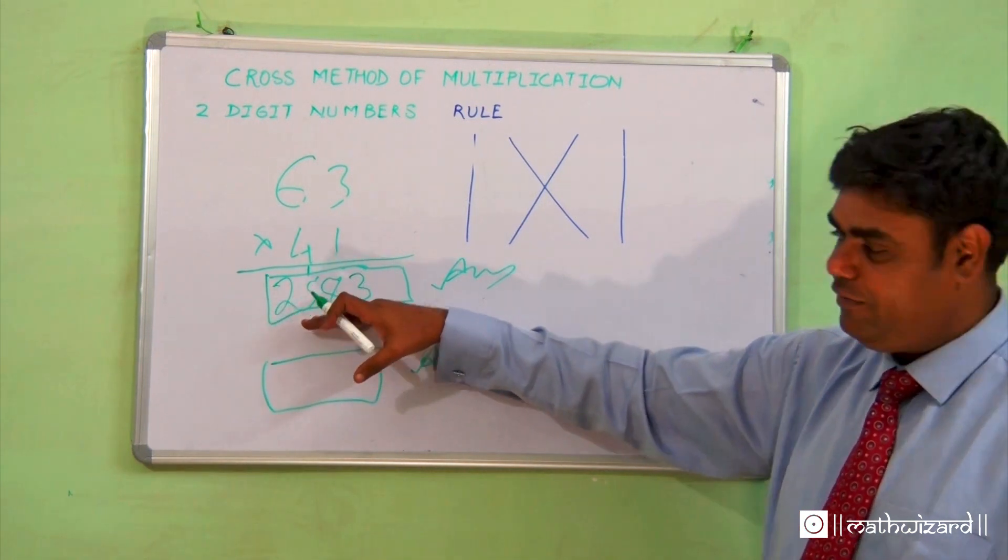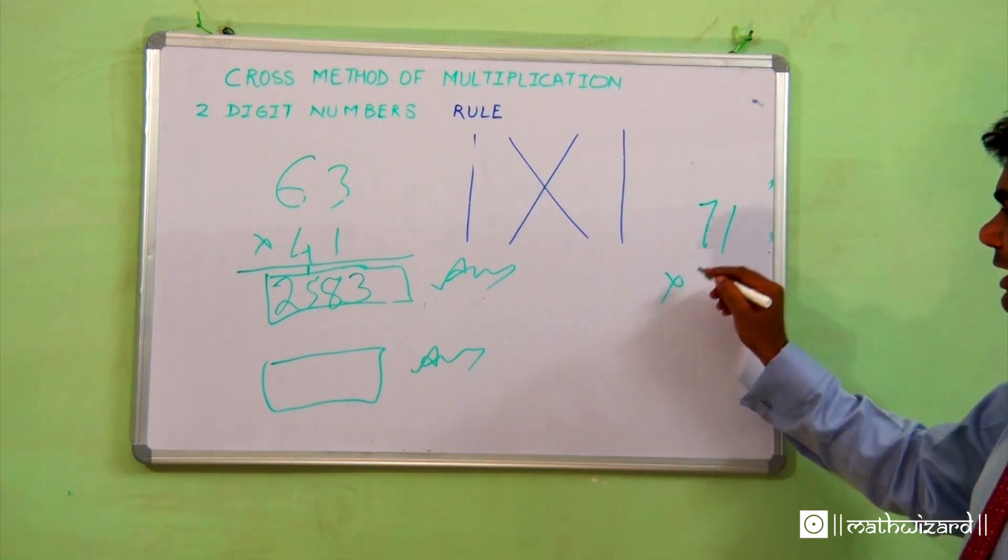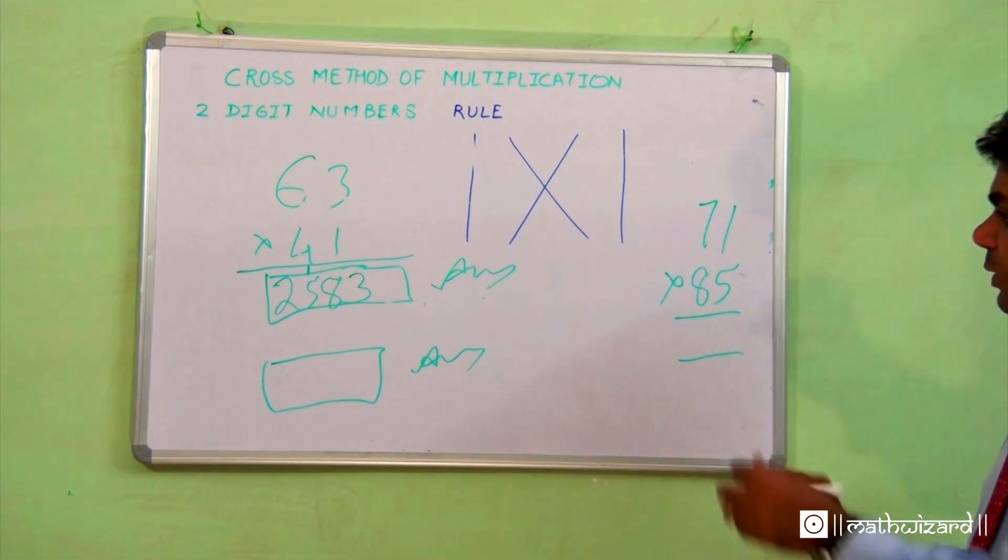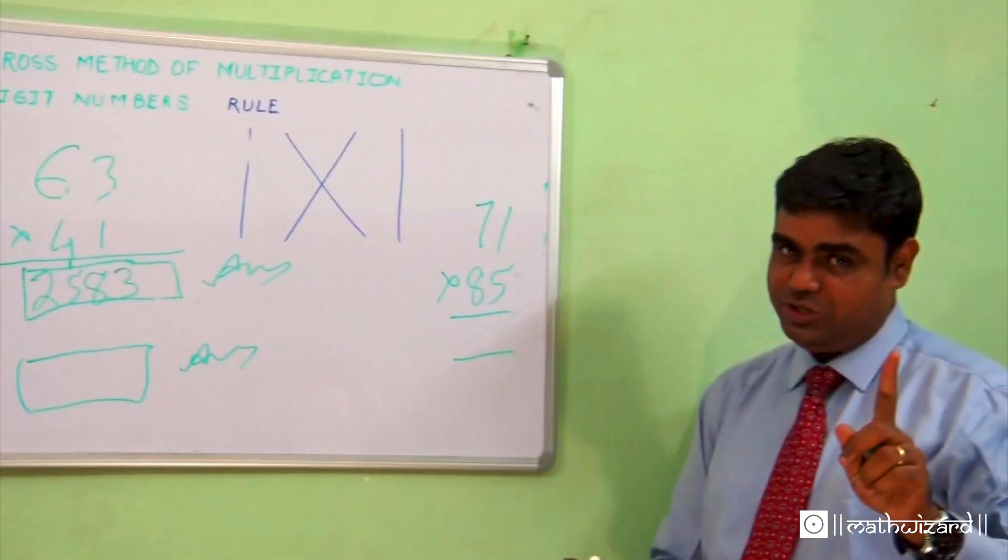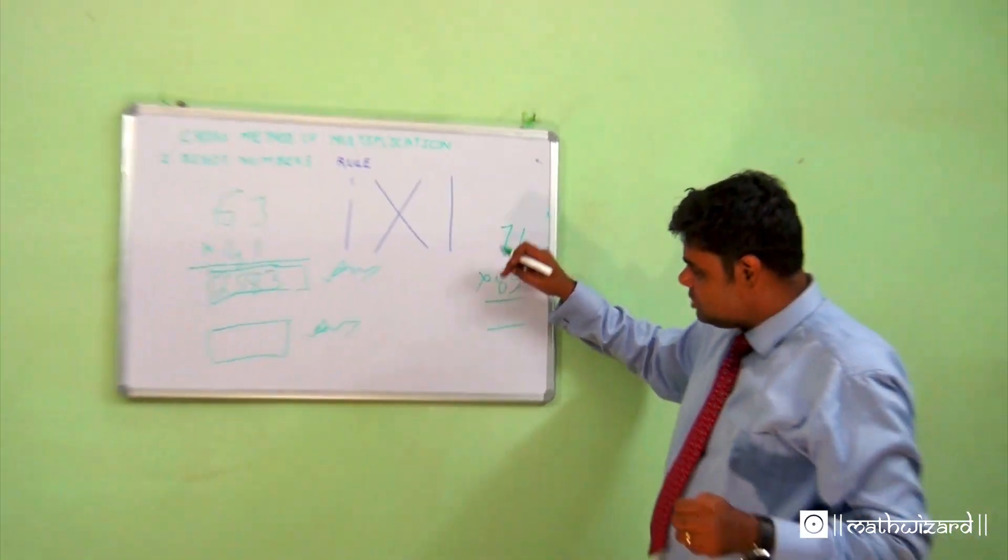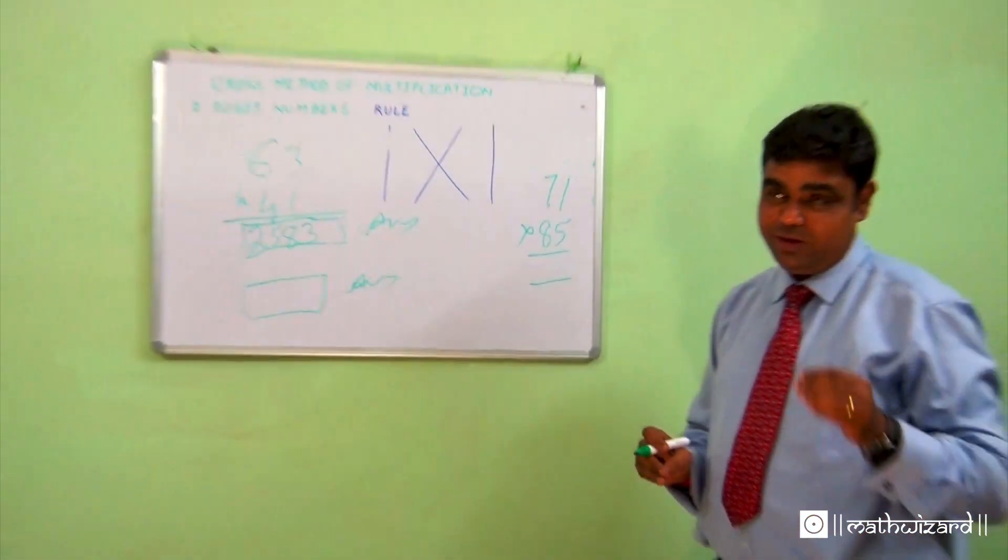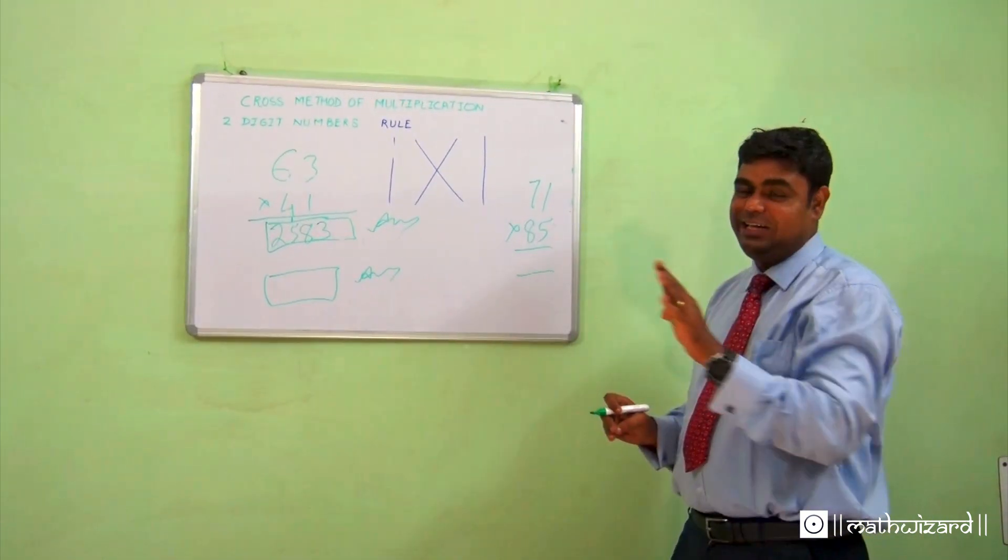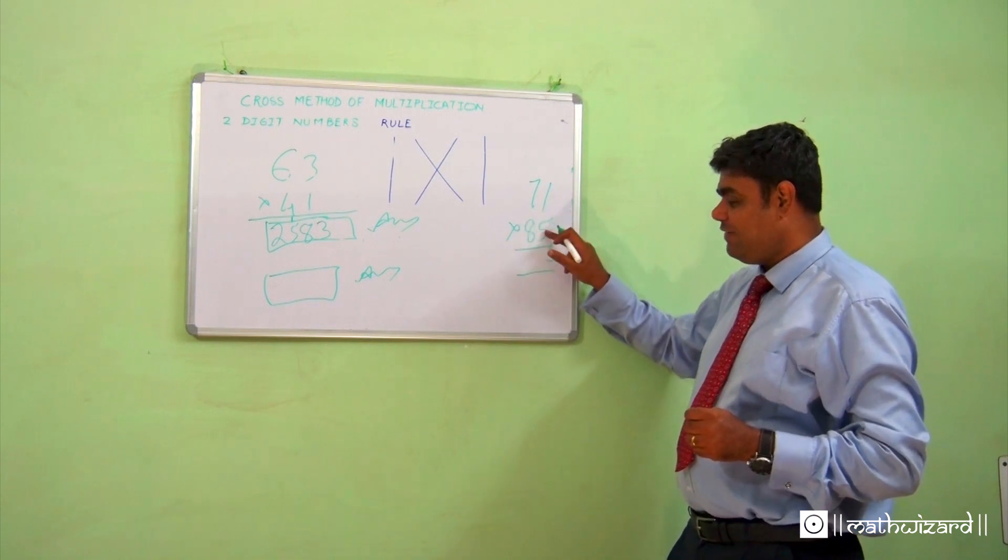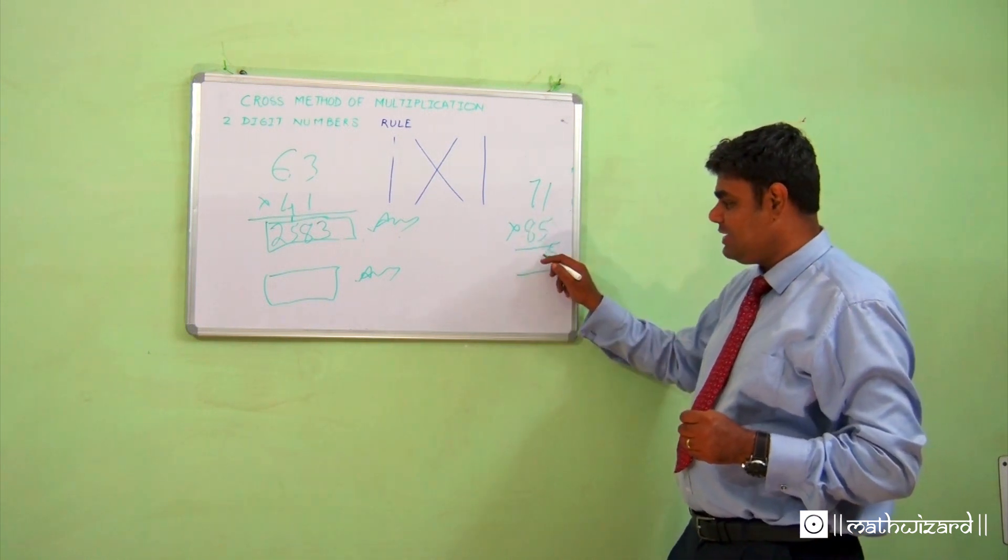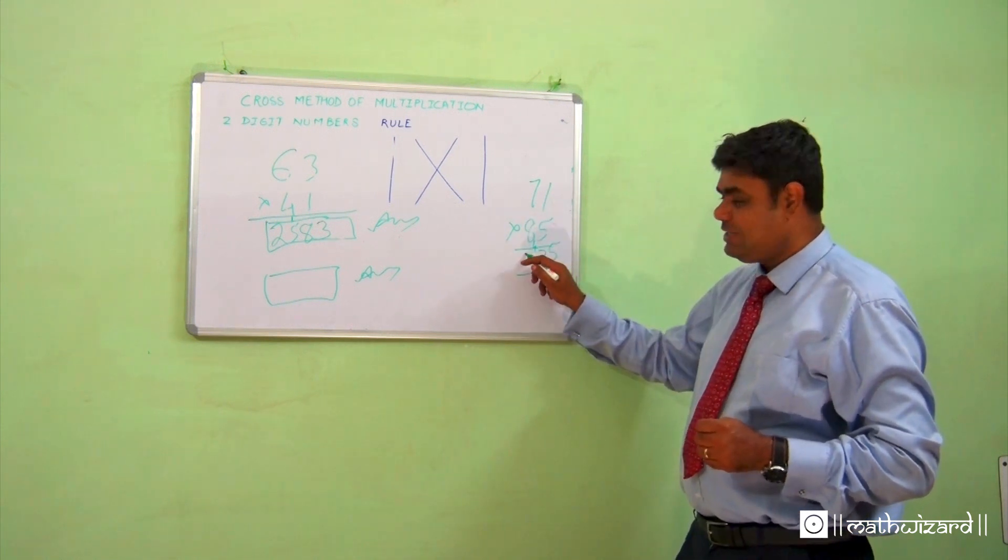Let's see another example. I'm multiplying these numbers. This will work with any two-digit number, no restrictions. Unlike special cases where the first digit should be the same or the last digit should add up to 10, here any two-digit number will perfectly work. Five ones are five. Seven fives are 35 plus eight gives me 43. Seven eights are 56. When I add up the balance four, I get 60. My final answer is 6035.